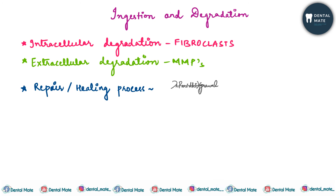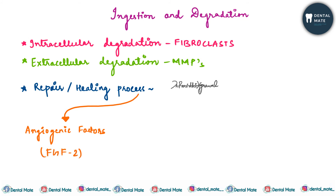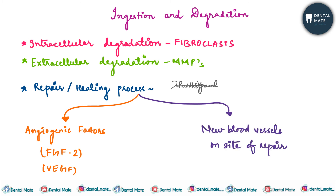The repair or healing process takes place by secretion of certain angiogenic factors such as fibroblast growth factor 2 and vascular endothelial growth factor, along with the formation of new blood vessels at the site of repair.